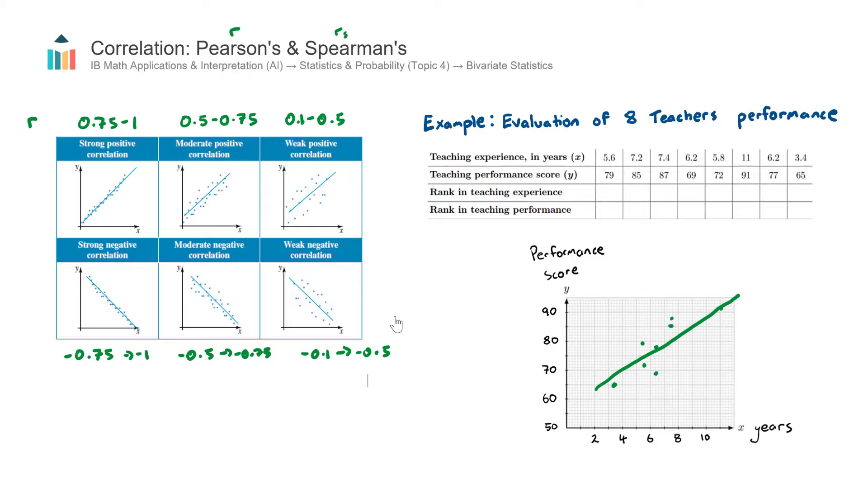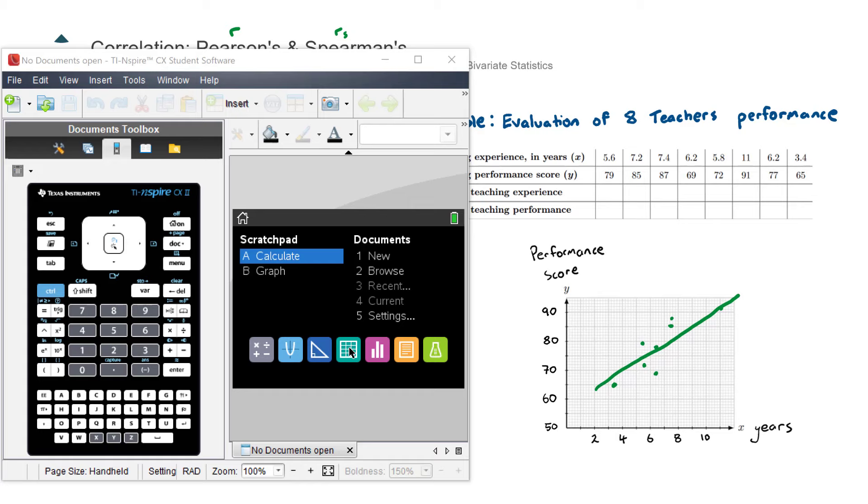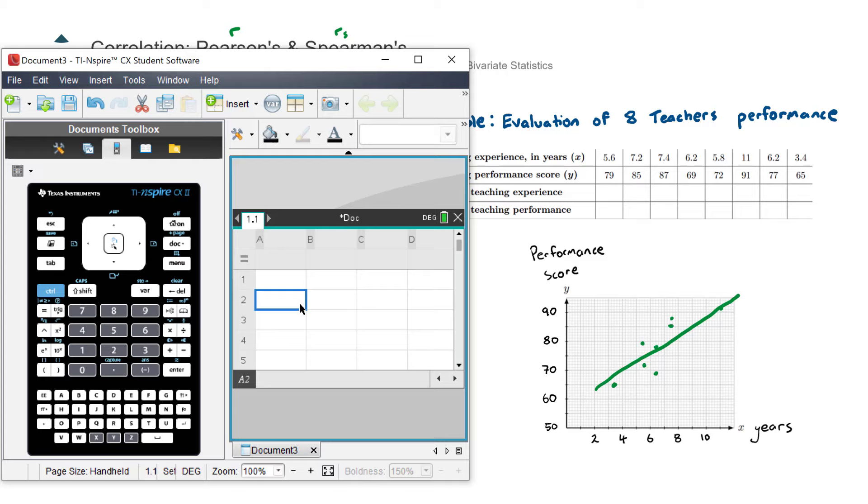Okay, so let's go ahead and actually find the R value for our example here. We have eight data points, and we're going to use our calculator to actually find the R value. Okay, we bring the calculator up, we go to this green statistics icon here, and we enter in this data. And I'll do this fairly quickly, because there's plenty of questions to practice on in the question bank. But we label the first column our independent variable. We label our second column our dependent variable. And then we go ahead and enter the data points. So the first one is 5.6 years taught, and with a performance score of 79. Now I'll go ahead and enter the next seven.